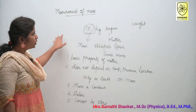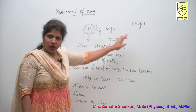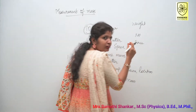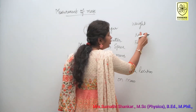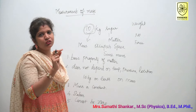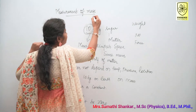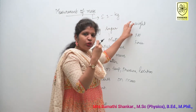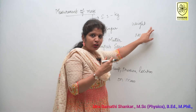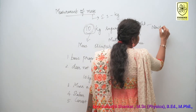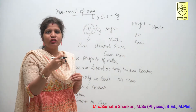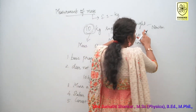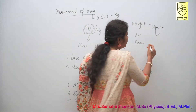Is mass the same as weight? No. Weight is the force exerted by gravity on the object. So weight is not the same as mass. What about the SI unit of mass? The SI unit is kilogram. Even though we usually talk about weight in kilogram, it should be measured in Newton. In practical day-to-day life, we normally say weight is in kilogram, but actually in physics the unit of weight is Newton, which is nothing but the unit of force.